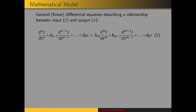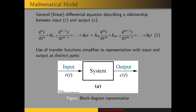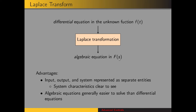In general we have for this topic a linear differential equation describing a relationship between an input which we'll call R and an output which we're calling C. Here is our general form of this linear differential equation. C has an nth derivative and R has an nth derivative. One thing that's nice about using transfer functions is that they simplify the representation of the system, and we have input, the system, and the output as distinct parts.